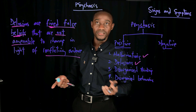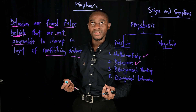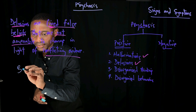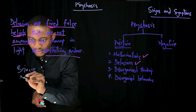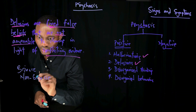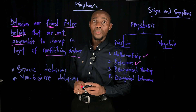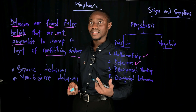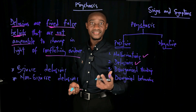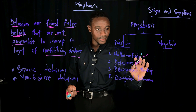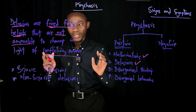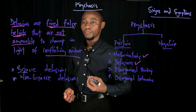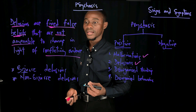Delusions also have categories. Broadly speaking, delusions can be categorized into two categories: bizarre delusions and non-bizarre delusions. Bizarre delusions are those delusions whose content can never be possible in the context of the person's culture and our lives as humans.